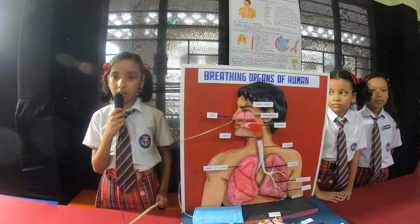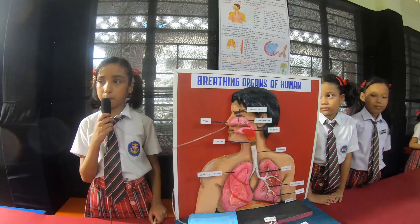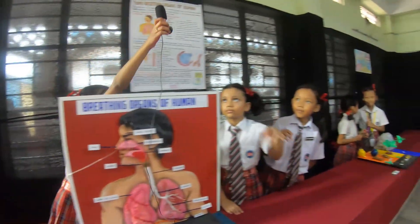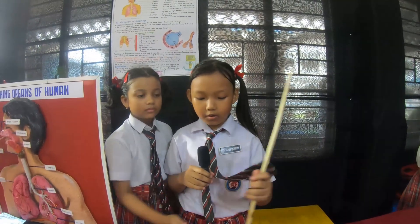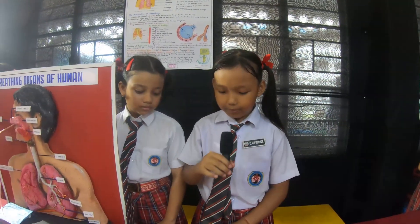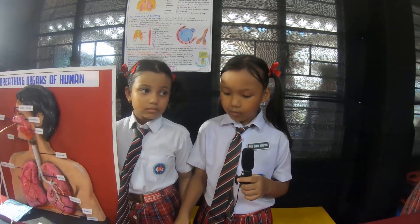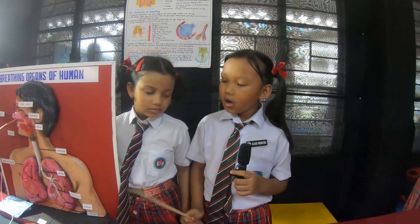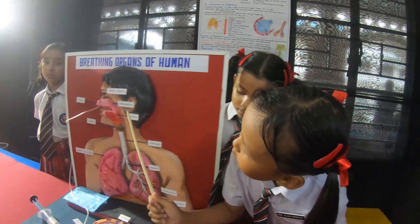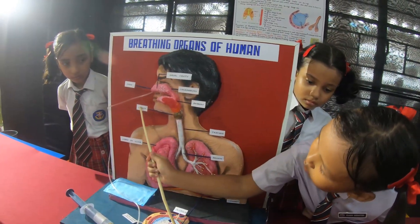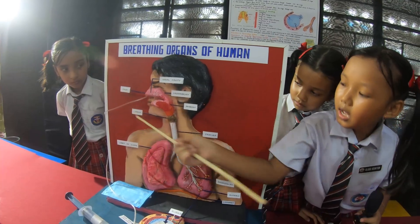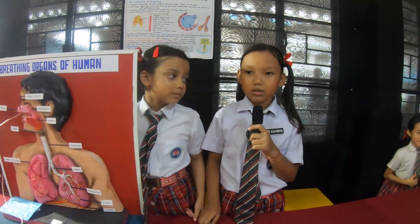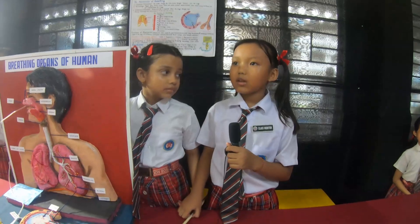The average breathing rate of an adult is 15 to 18 times per minute. The breathing process supplies oxygen to the body and removes carbon dioxide. It filters the air by removing harmful substances, allows us to talk through the larynx, allows us to smell through the nose, and warms the air to match body temperature while also moisturizing the air. It regulates the blood pH.